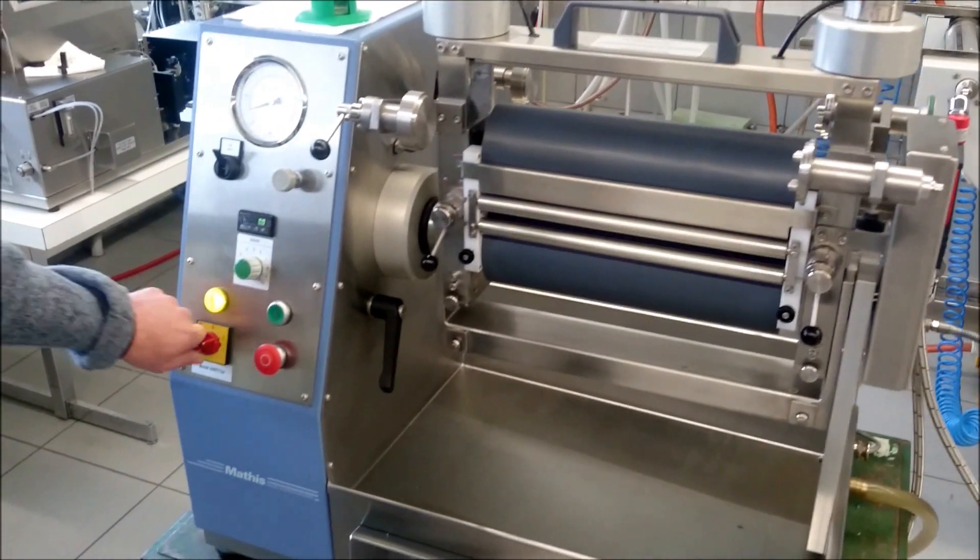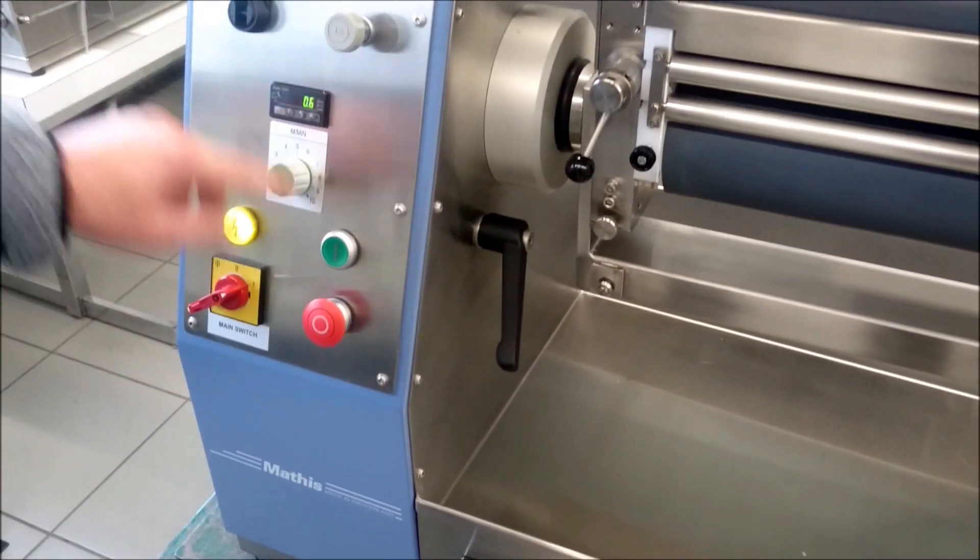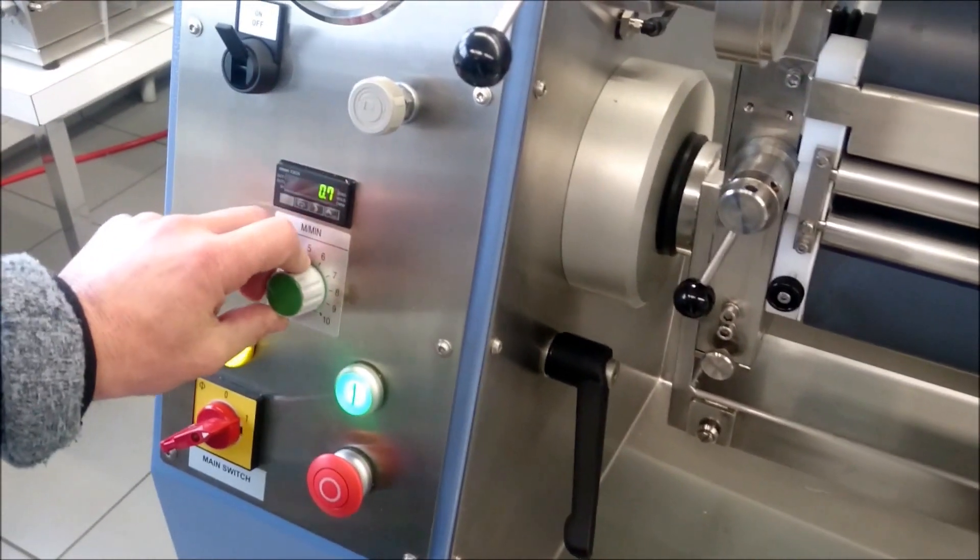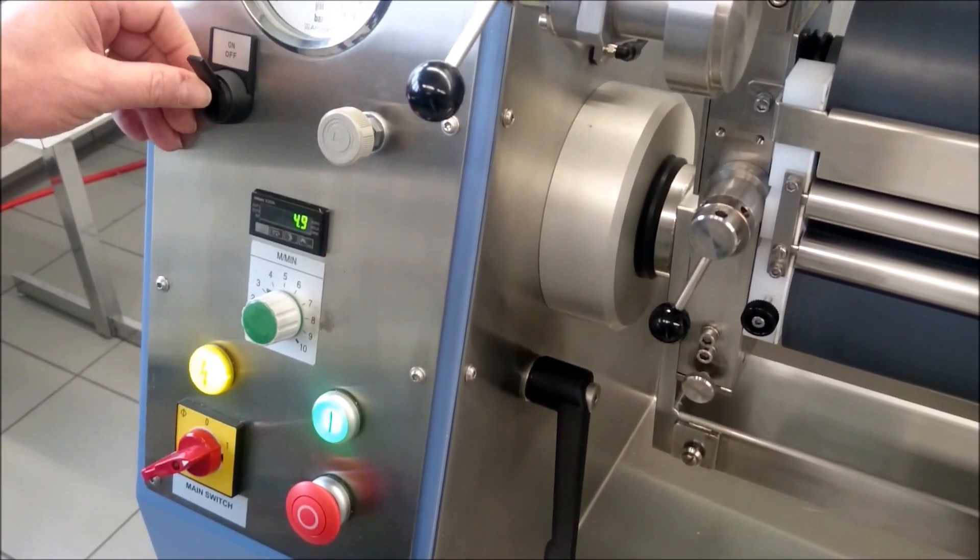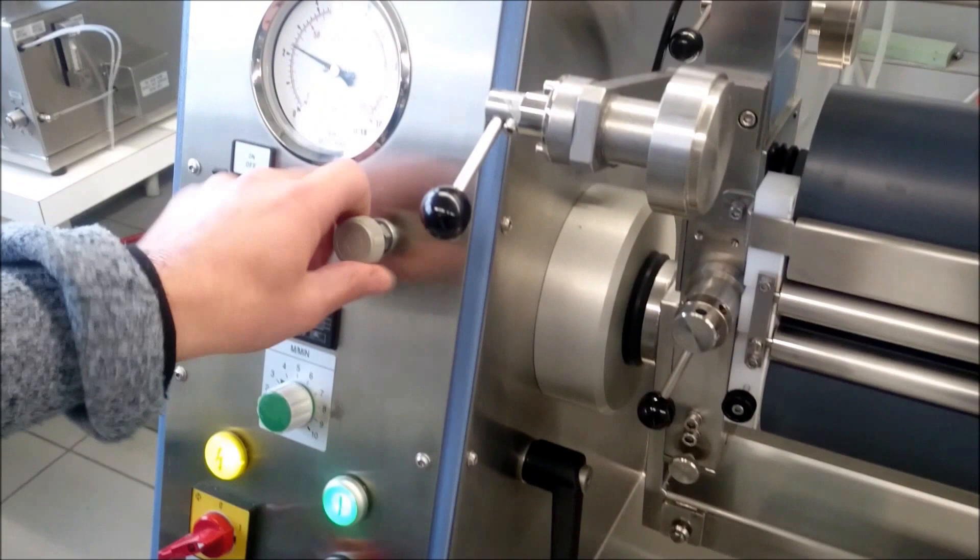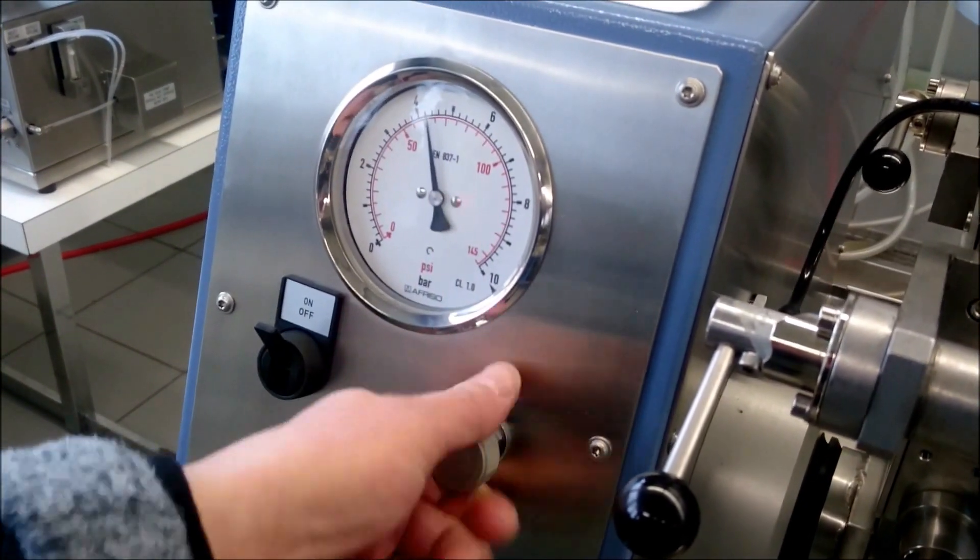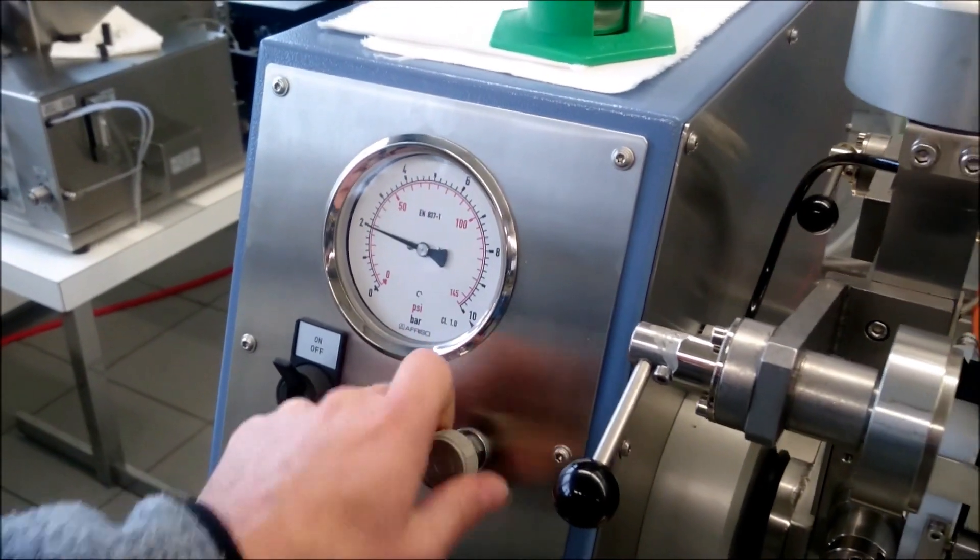What we have here: main switch, then we have start and stop. Speed is from 0.1 until 10 meters maximum. Opposite here, switch off squeezing with the adjustments from 1 bar until maximum 6 bars to adjust the pick-up of the samples.